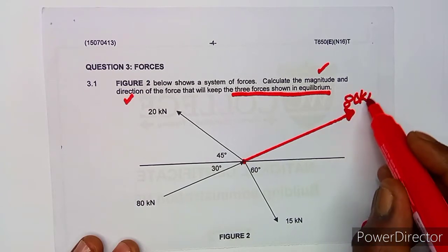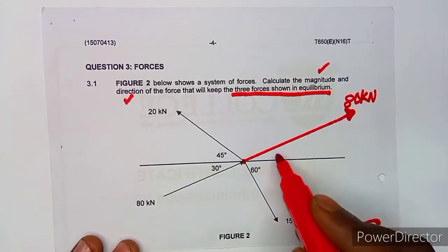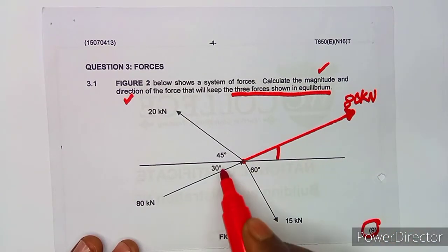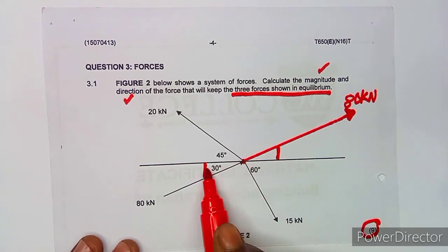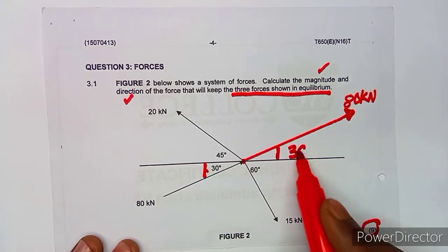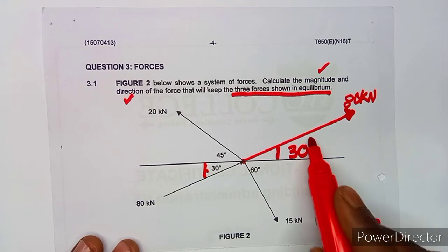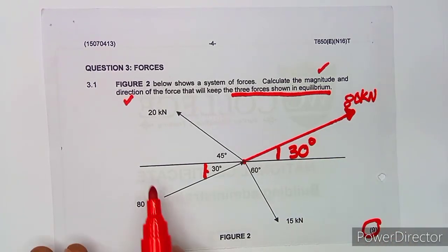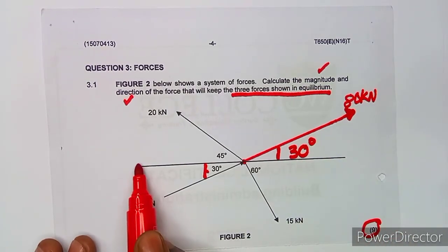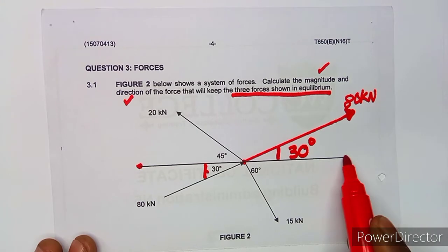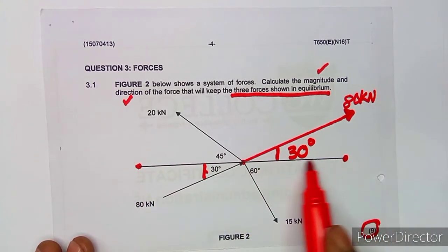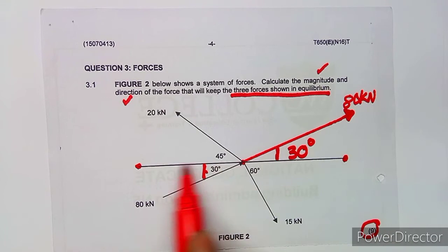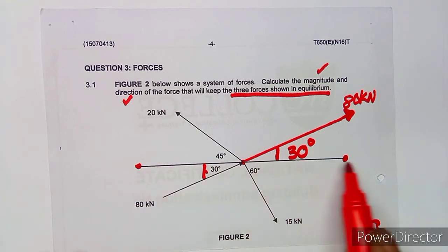The angle remains the same as before because these are vertically opposite angles, so this will remain as 30 degrees. This line here is representing the horizontal line — as you can see, there is no force given along this line, so this is actually representing a horizontal line.